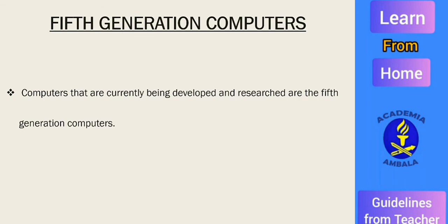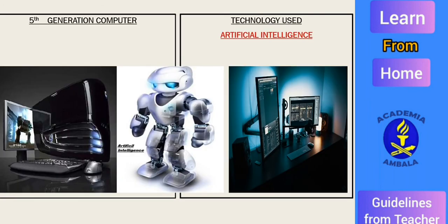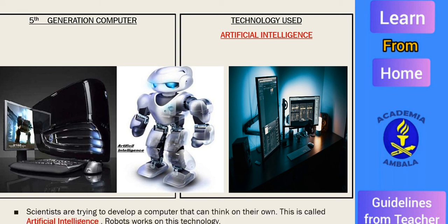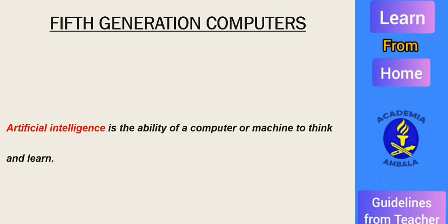Fifth generation computers are currently being developed and researched, and are the most advanced computers. Scientists are trying to develop computers that can think on their own — this is called artificial intelligence. Artificial intelligence is the ability of a computer or machine to think and learn, and robots work on this technology. That's all for today.